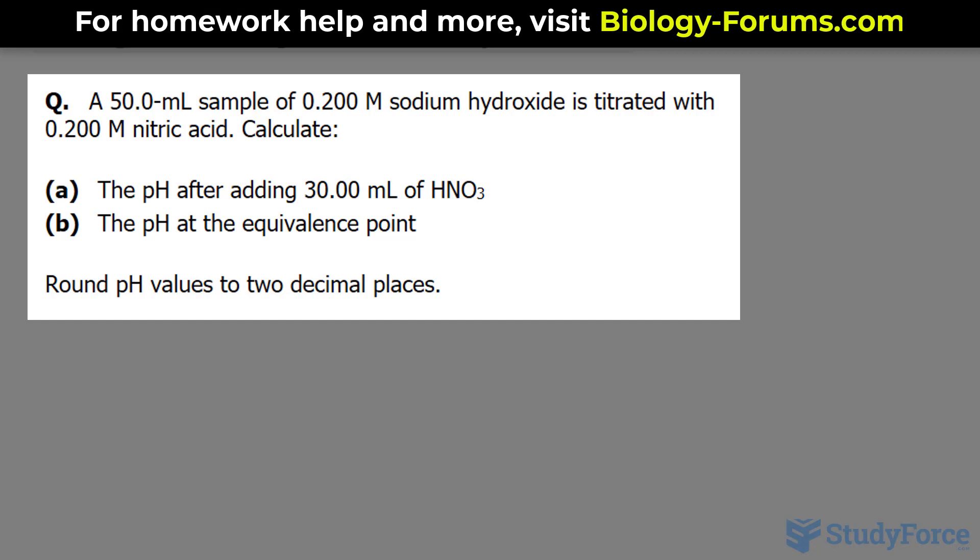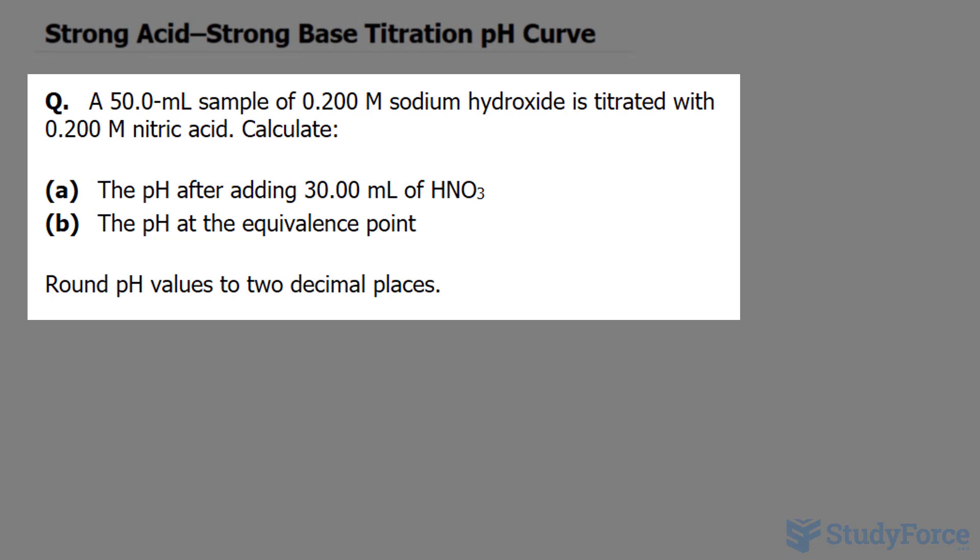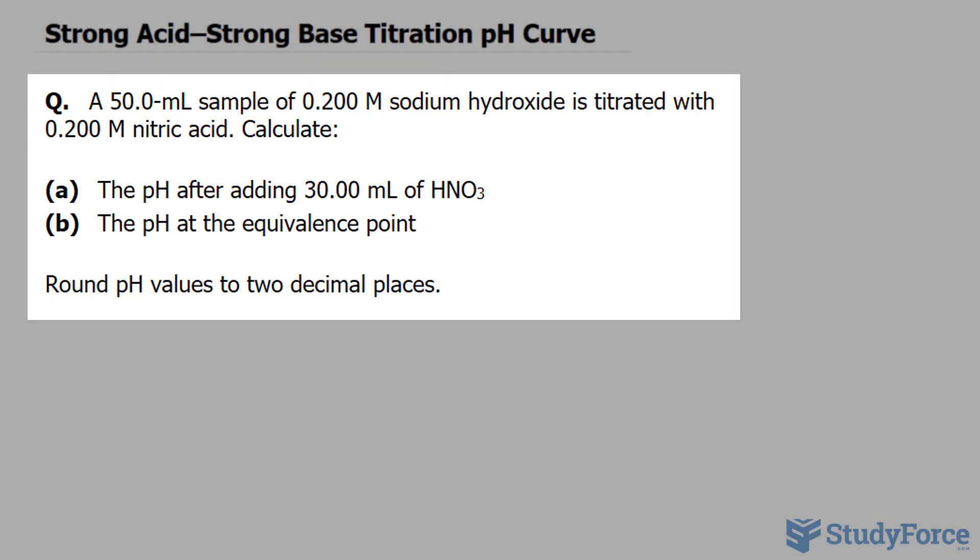We're expected to calculate two things. The pH after adding 30.00 milliliters of HNO3, that's nitric acid, and the pH at the equivalence point. We'll discuss what those things mean in a moment.